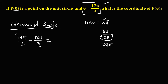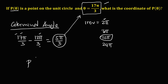So we subtract: 17π minus 12π equals 5π, over 3. So 5π/3 is the coterminal angle of the given angle 17π/3.